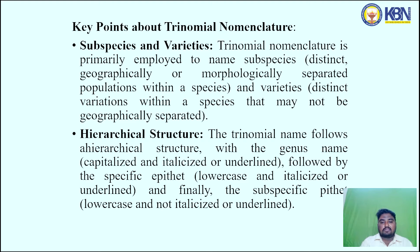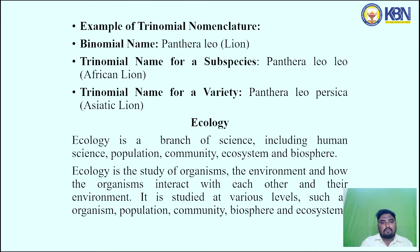The trinomial nomenclature follows a hierarchical structure: the genus name is capitalized and italicized, followed by the specific epithet in lowercase italicized, and finally the subspecies name in lowercase, not italicized. For example, the binomial name is Panthera leo; the trinomial name for a subspecies is Panthera leo leo (African lion); and the trinomial name for a variety is Panthera leo persica (Asiatic lion).